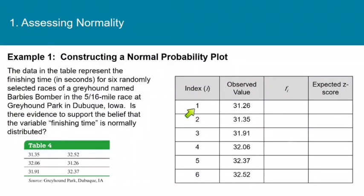Using that formula, for the index of 1 we would get an f sub i of 0.1, and for the index of 2 we would get 0.26, and you would do that for each index. What these f sub i values are is the proportion of observations we can expect to be less than or equal to the corresponding observed value. We could expect about 10% of the population values to be less than 31.26, and about 26% to be less than 31.35 if in fact the population that this sample was drawn from is normally distributed.